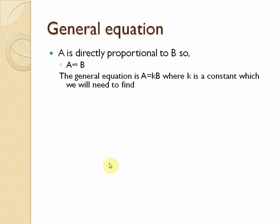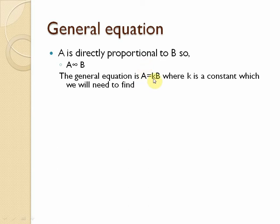The general equation for direct proportion: a is directly proportional to b, which we write as a = kb. Here k is the proportionality constant — it defines how many times b increases when a increases. We need to find the value of k. This is the main part of direct and inverse proportion: first we have to find the value of k.